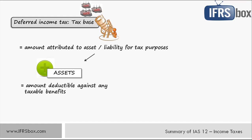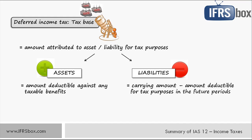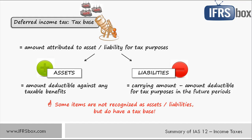For example, imagine you have an interest receivable of 1,000 in your accounts. If the interest received is taxable on a cash basis, the interest receivable has a tax base equal to zero. Tax base of a liability is its carrying amount less any amount that will be deductible for tax purposes in respect of that liability in future periods. For example, when accrued expenses are taxed on a cash basis, the related liability has a tax base equal to zero. Moreover, there could be some items not recognized as assets or liabilities in the statement of financial position that still have a tax base — for example, research expenses recognized in profit or loss in the period incurred, but where tax law did not permit them as a deduction until a later period.